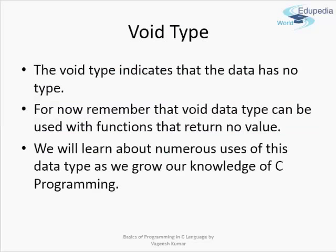Apart from all these data types, there is also void. The void type indicates that the variable or data has no type. One use of void is with functions that return no value — if you want to make a function that returns no value, you precede it with the void data type. There are numerous uses of the void data type which we will learn about as we proceed further.